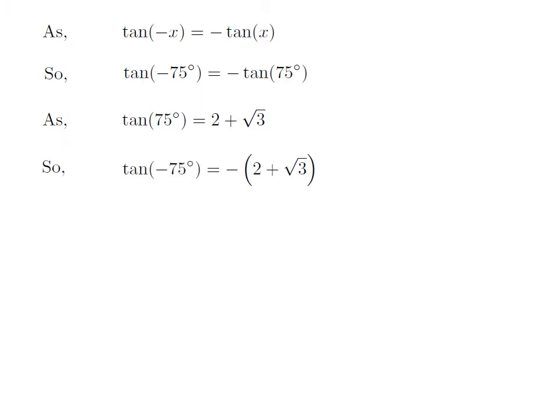So we get the value of tan(-75°) = -(2 + √3).